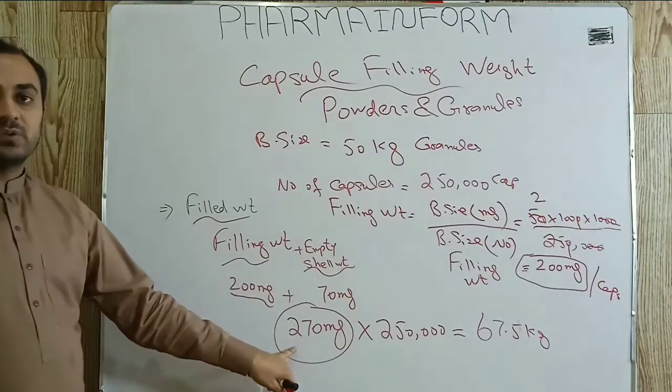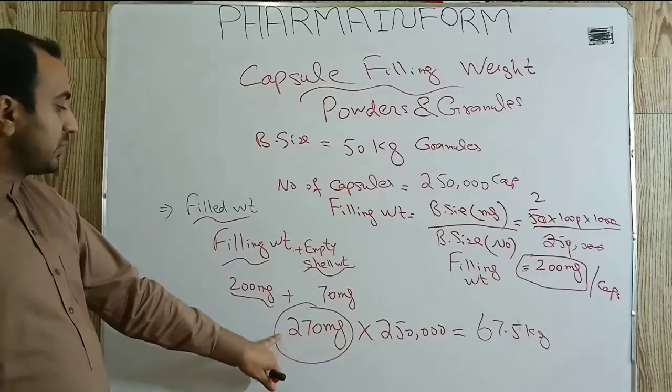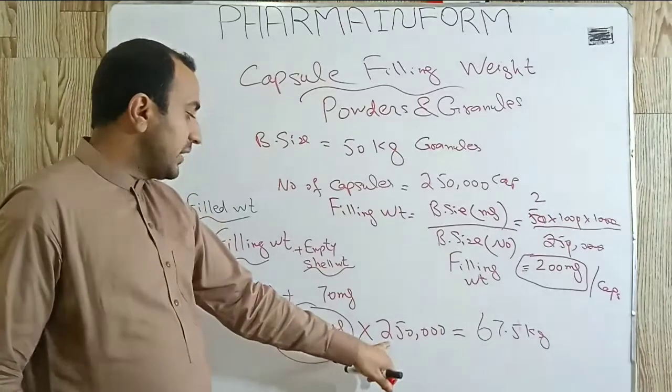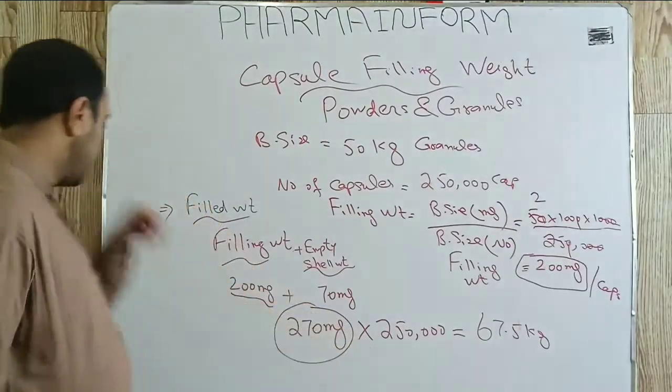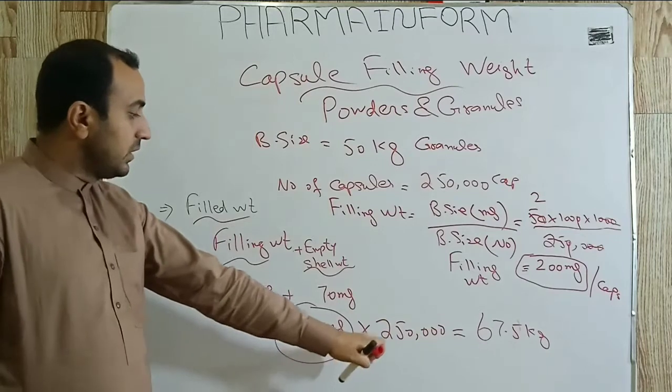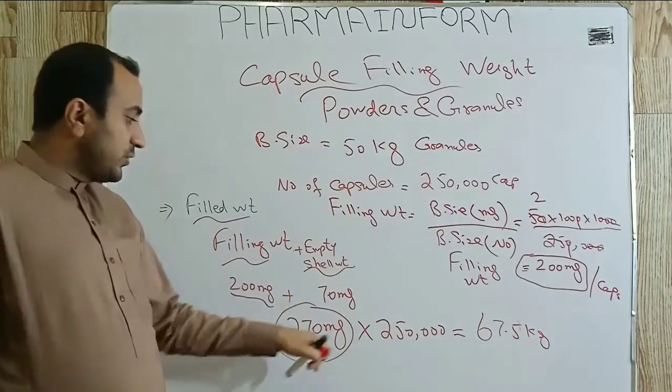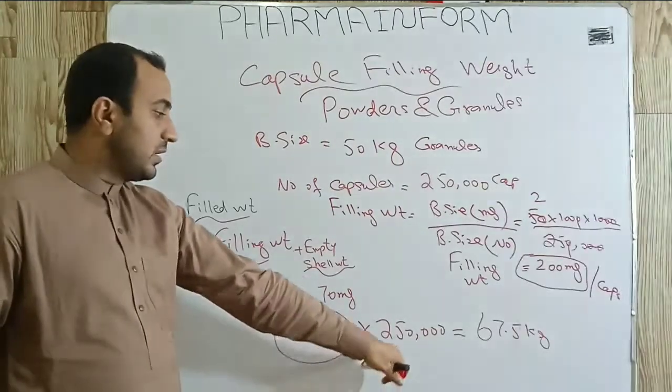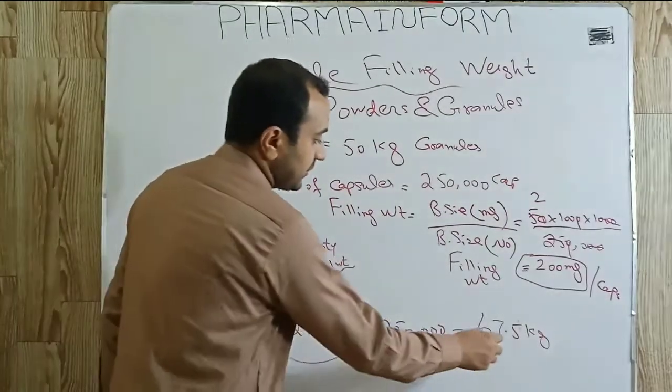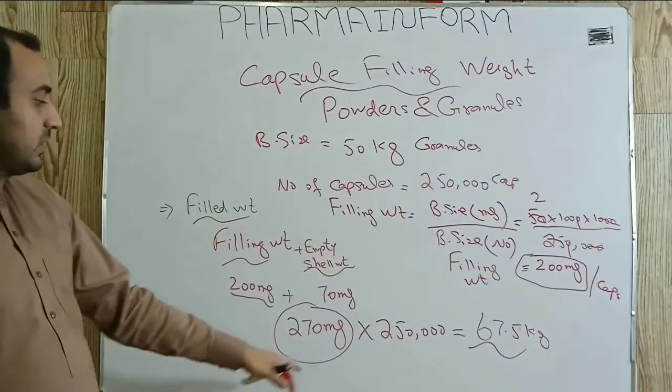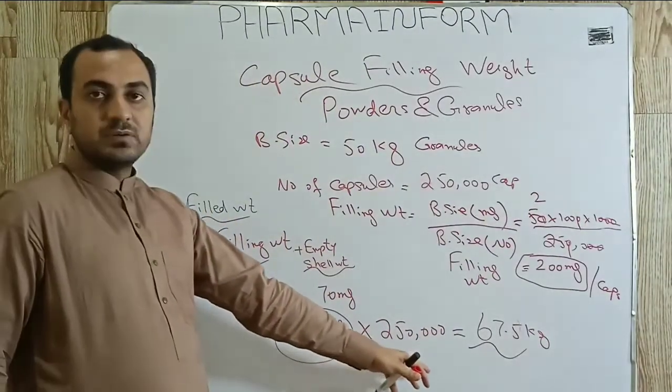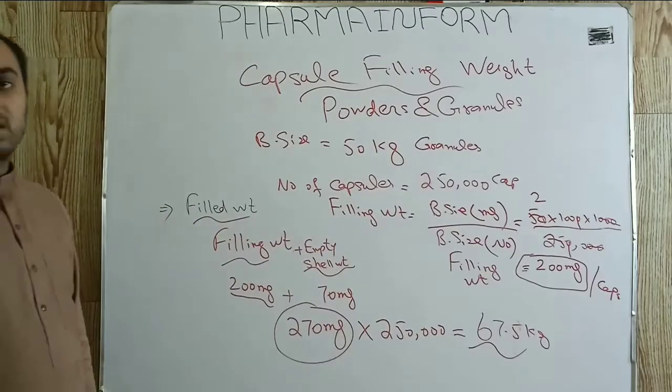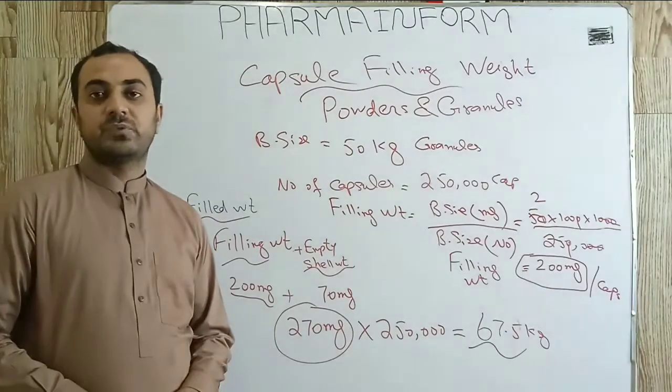So one filled capsule shell has a weight of 270 mg. If we want to calculate filled weight for 2 lakh 50,000 capsules, we will multiply 270 with 250,000. Our answer will be 67.5 kg, meaning 2 lakh 50,000 capsules filled weight will be 67.5 kg. If you like the video, share it and subscribe to the channel.